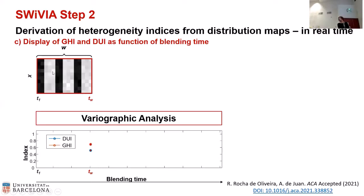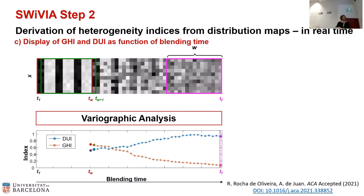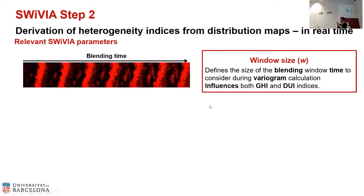The idea is: I have a concentration map for a particular compound; I take the first window and get the two indices; I move the window one line ahead in time; and I keep doing this as long as I collect pixel lines during the blending process. Finally, I have a picture showing how the global heterogeneity index decreases as a function of time — because pixel concentration values become more similar — and how the distributional uniformity index improves because the material is more evenly distributed. To process one of these lines takes less than 0.1 seconds, so this can truly be done in real time.